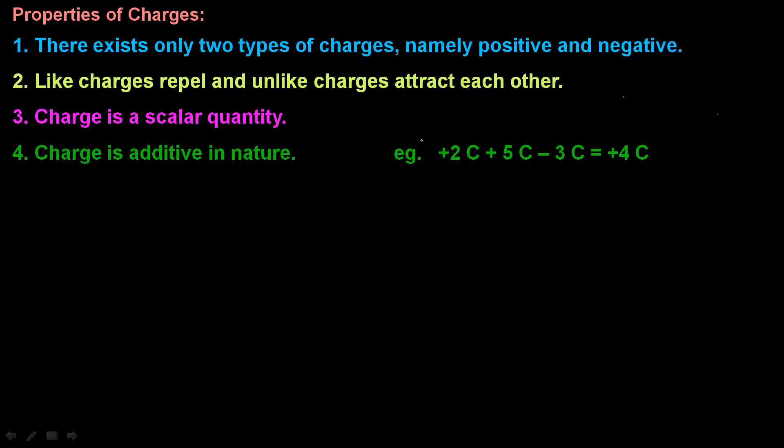For example, if a sphere has charges at various locations — say plus 2, plus 5, and minus 3 — the total charge enclosed within the sphere is the algebraic sum: plus 4. We can study the sum of the charges. This additive property is very important.